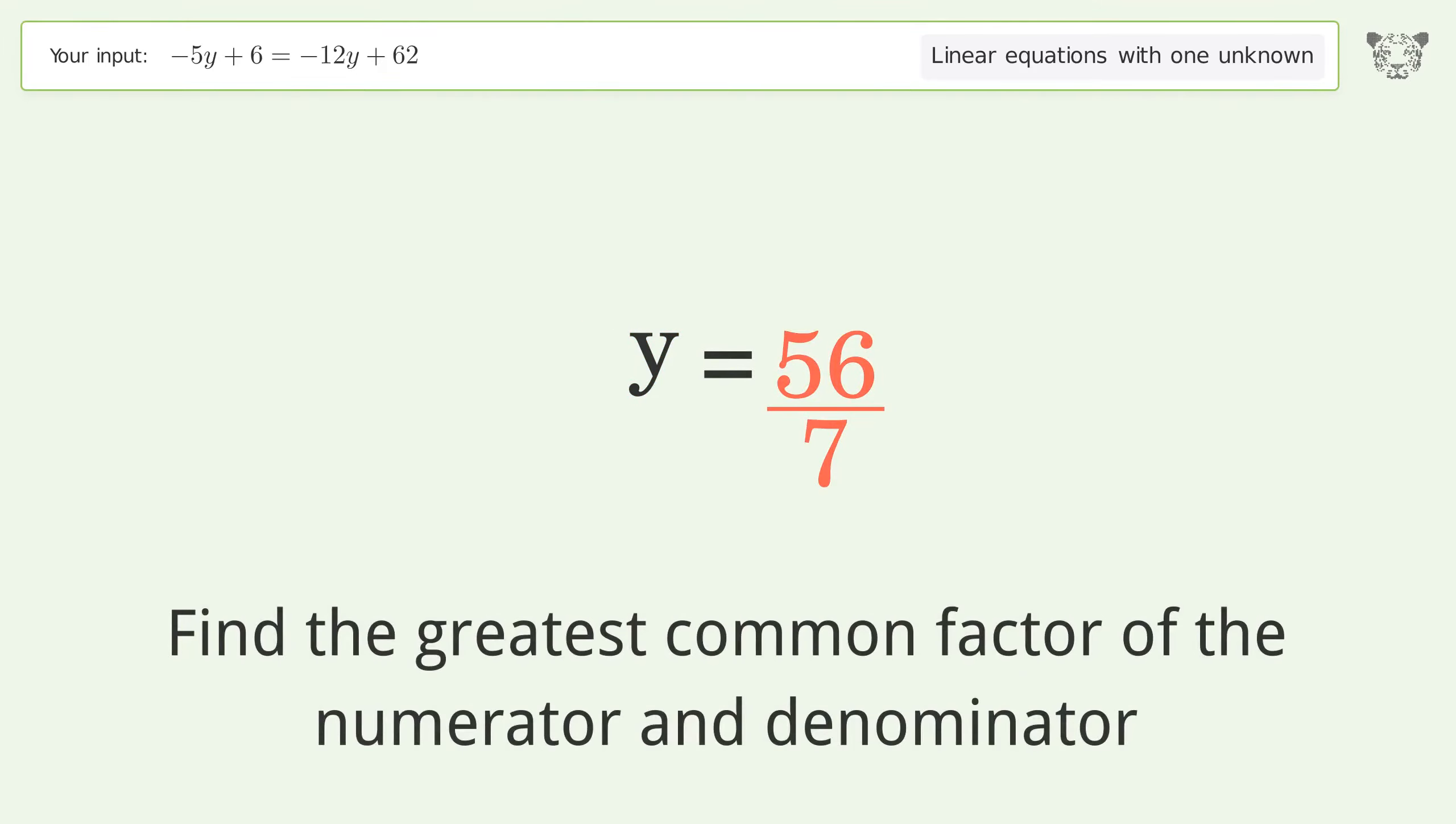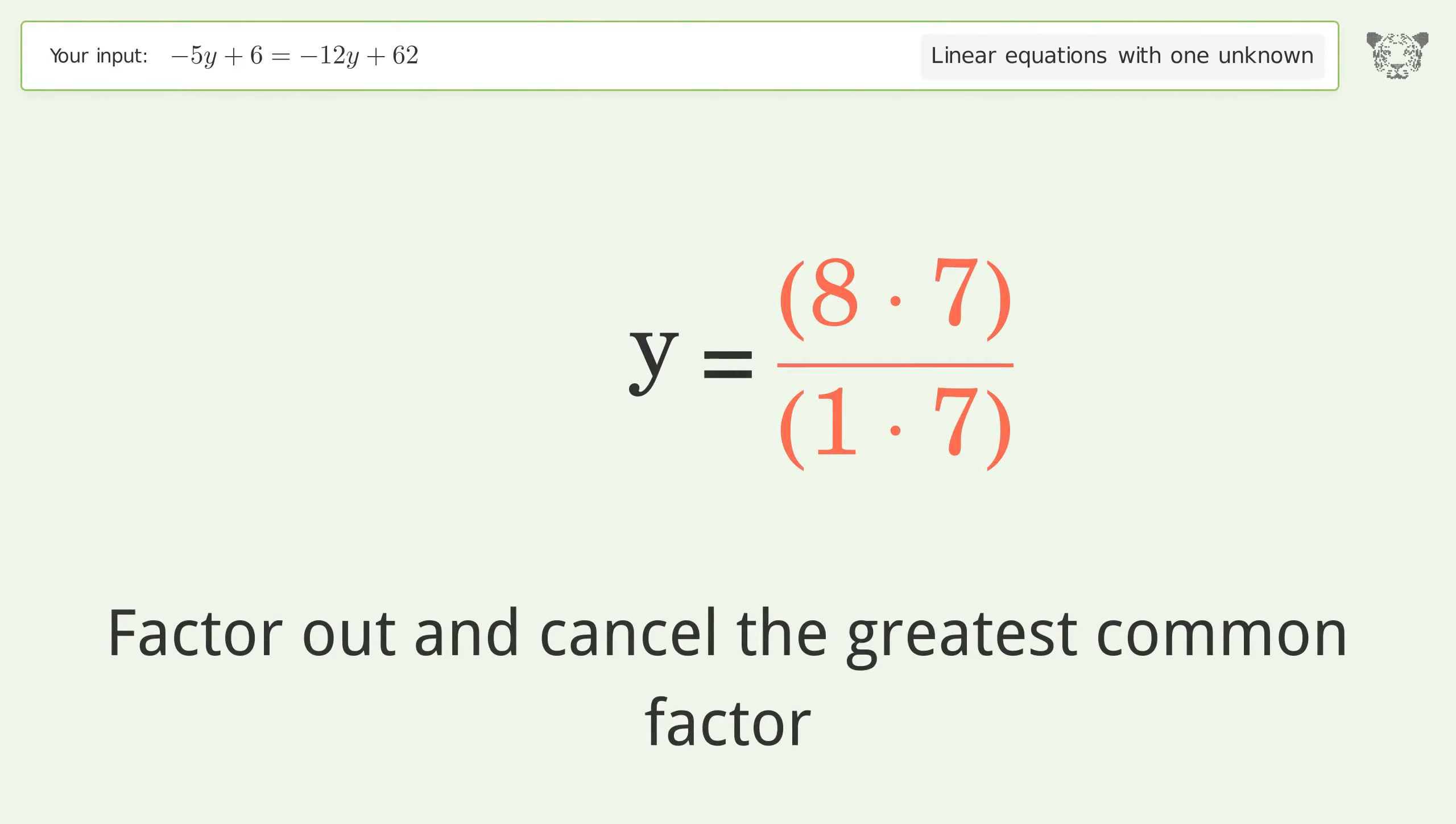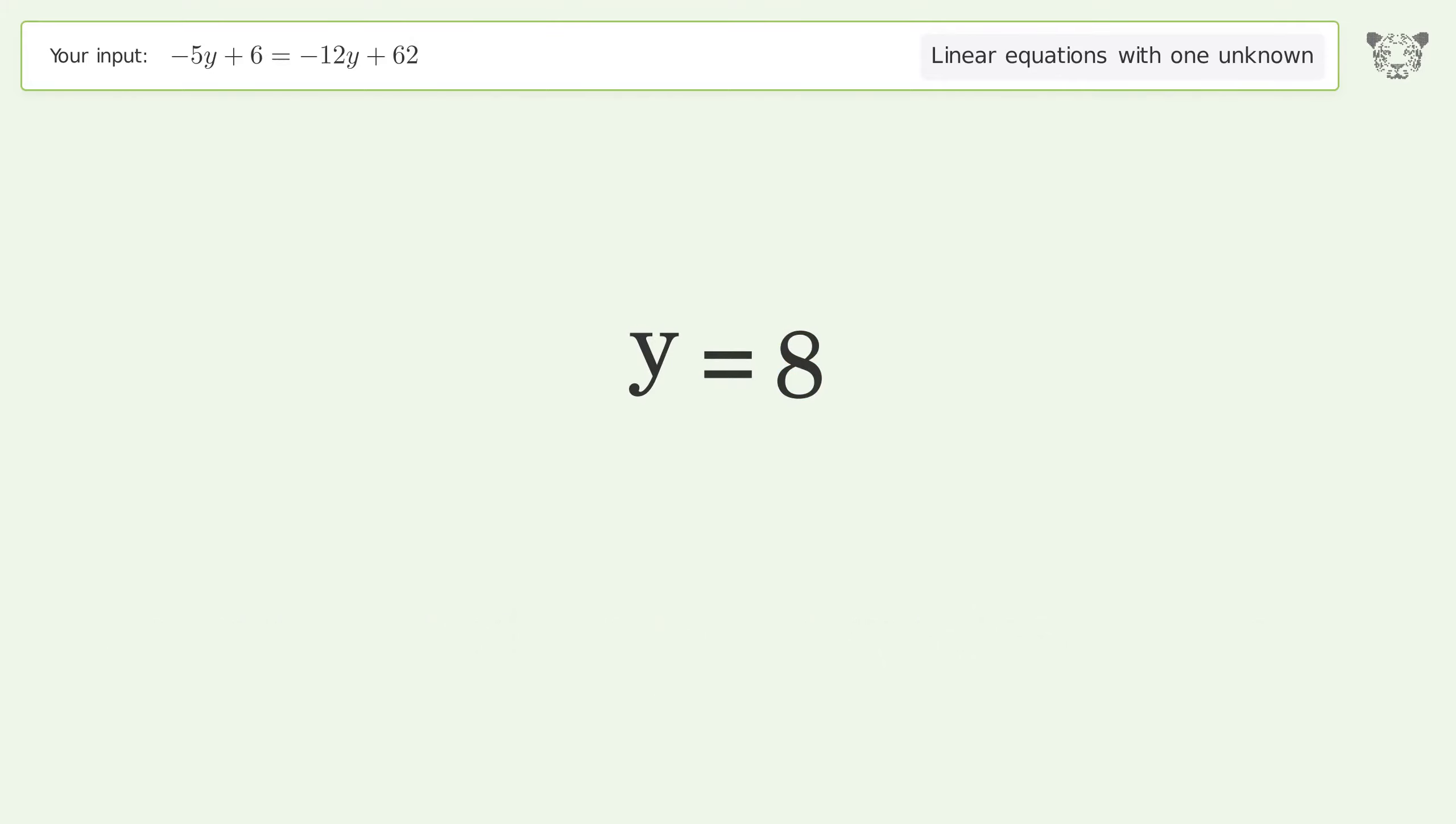Find the greatest common factor of the numerator and denominator. Factor out and cancel the greatest common factor. And so the final result is y equals 8.